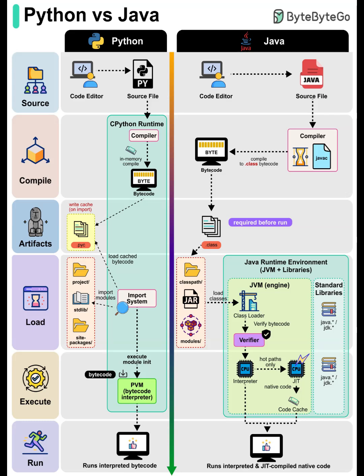Next up is the artifacts and loading phase. In Python, the interpreter checks for any cached bytecode and uses the import system to gather everything it needs, like project files, standard libraries, and site packages. In Java, the runtime — the Java Virtual Machine, or JVM — relies on the classpath and .jar files to collect all the necessary bytecode classes and modules before proceeding.